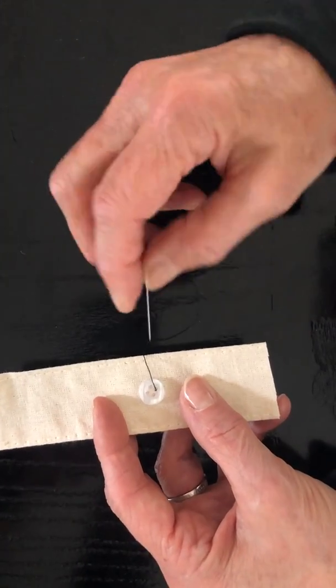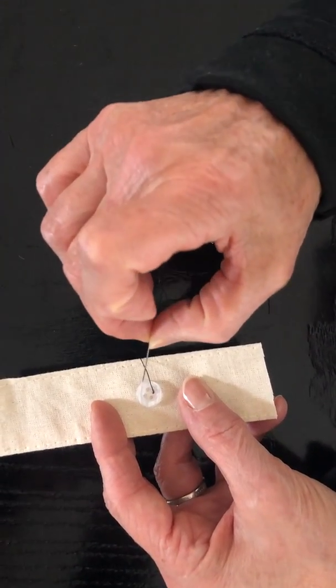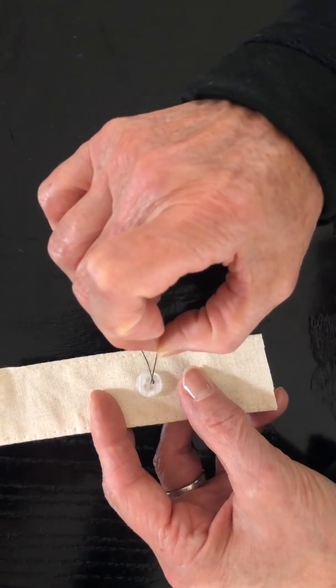I have a knot in the back of my fabric so it doesn't come all the way through. Now I'm going to go diagonally.